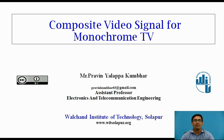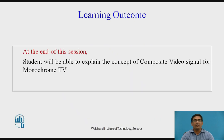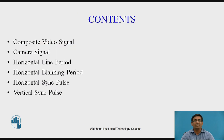Today we want to see the composite video signal for monochrome TV. The learning outcome of this topic is that at the end of the session, students will be able to explain the concept of composite video signal for monochrome TV. The contents of these topics are composite video signal, camera signal, horizontal line period, horizontal blanking period, horizontal sync pulse, and vertical sync pulse.